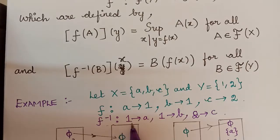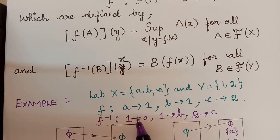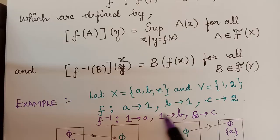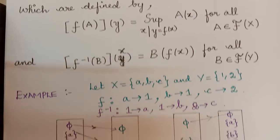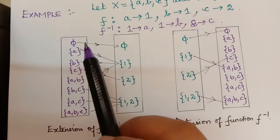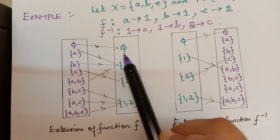If we generally observe in terms of crisp functions, the inverse will lose its property of being a function, because we know that one element cannot be mapped to two elements. But while extending it as a fuzzy set, let us see how the mapping we induce is. The null set will be mapped to the null set.